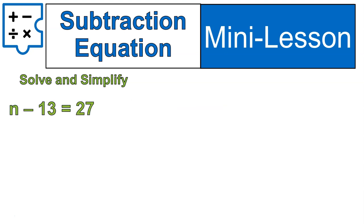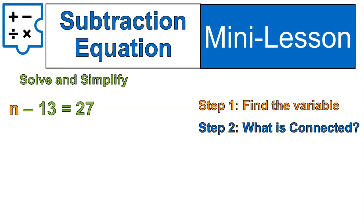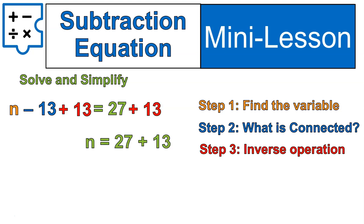I've got another question here. n minus 13 is equal to 27. We're going to follow exactly the same steps. Find the variable. Go ahead. Touch the screen. Where's the variable? Put a fingerprint on it. Right there on that letter n. What is it connected to? Negative 13. What's the opposite or the inverse of negative 13? Plus 13. So I do that to both sides of this equation. That gives me n is equal to 27 plus 13. Solve and simplify. 27 plus 13 is 40. And that's how you solve these ones.